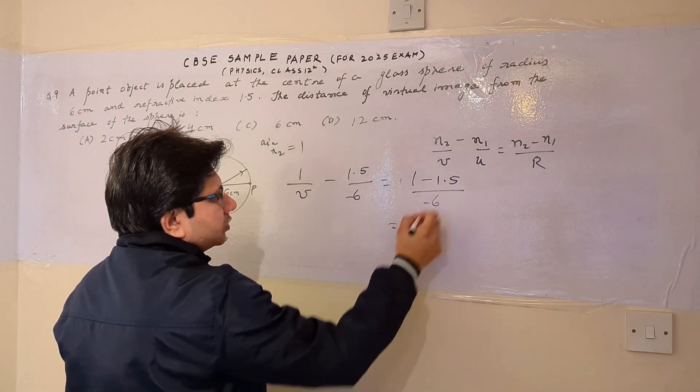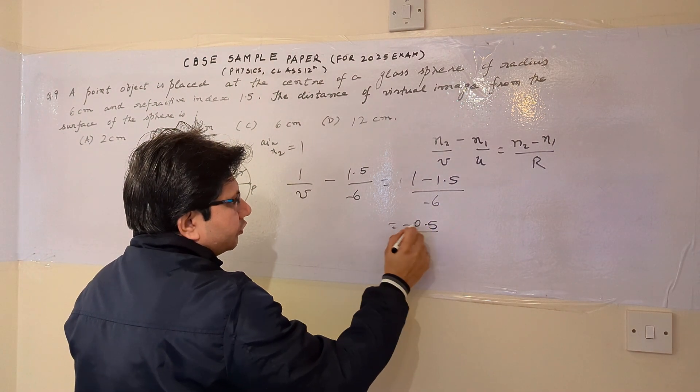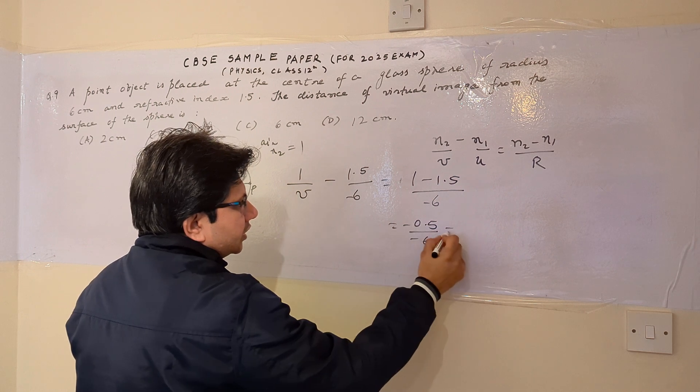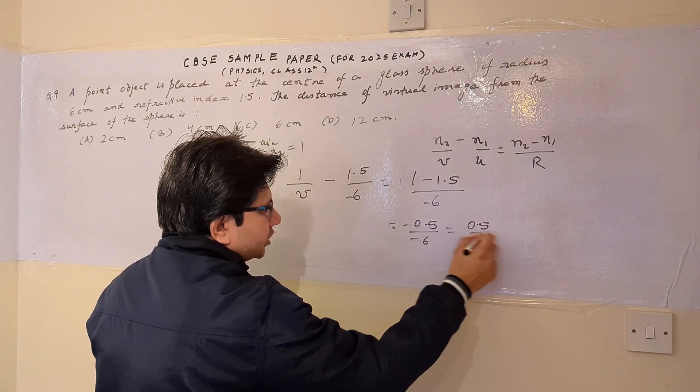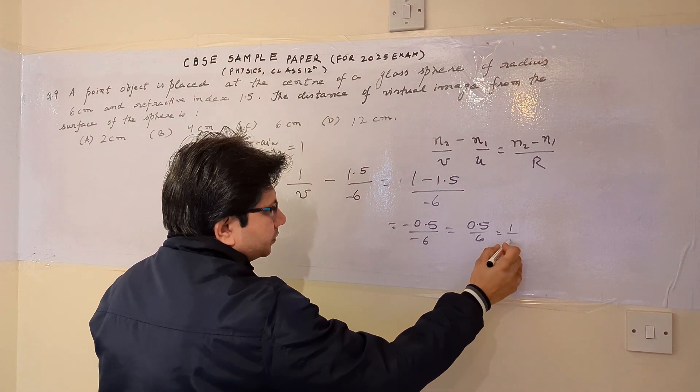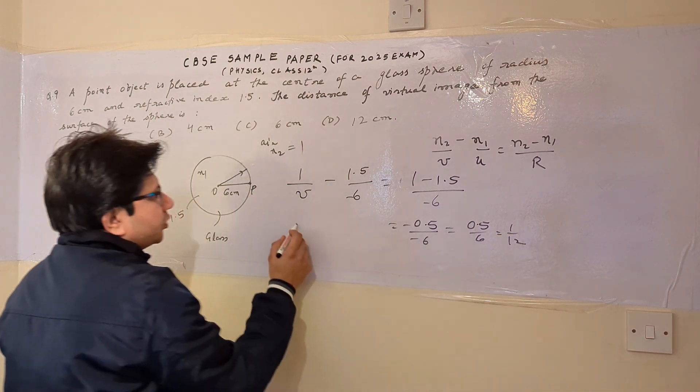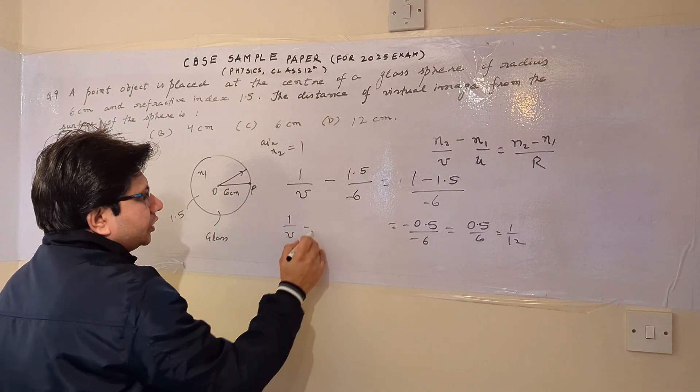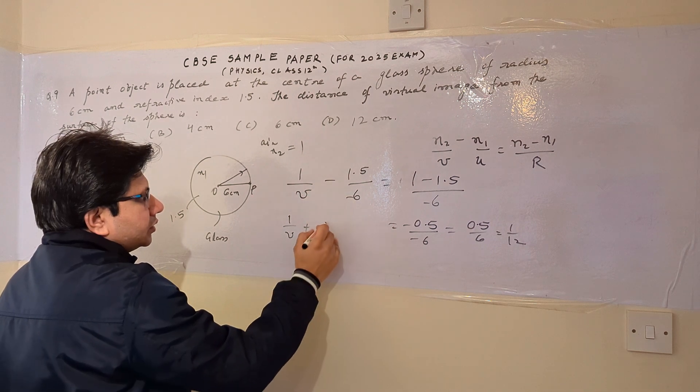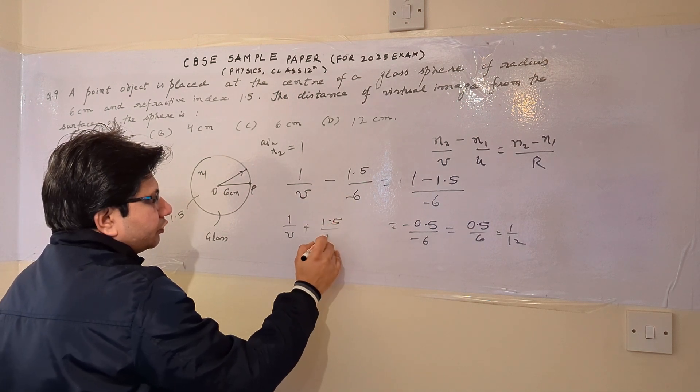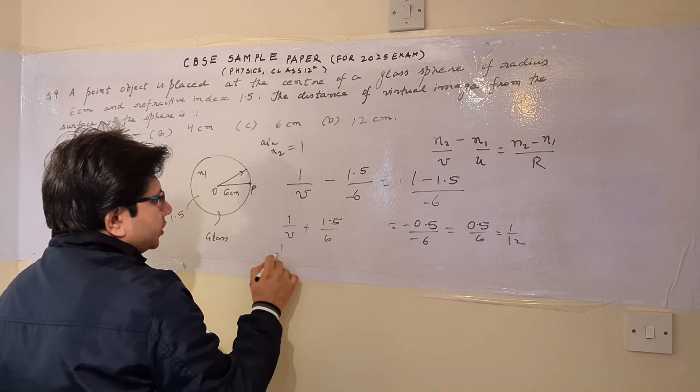So after solving this, this comes out to be 0.5 minus 0.5 upon minus 6, which is 0.5 upon 6, which is 1 upon 12. And from here, we get this value is 1 upon V plus 1.5 upon 6.